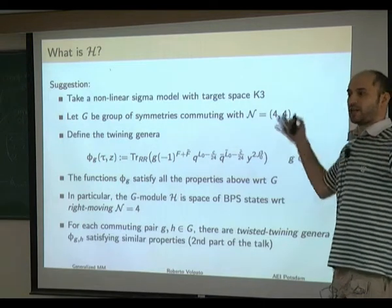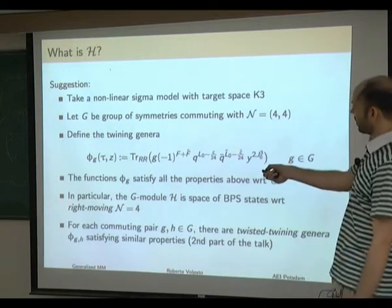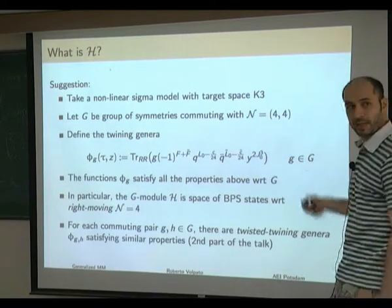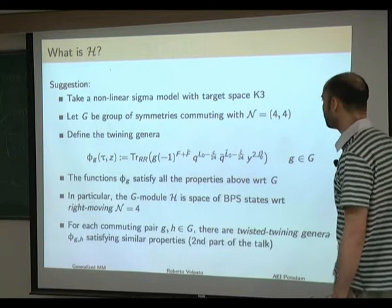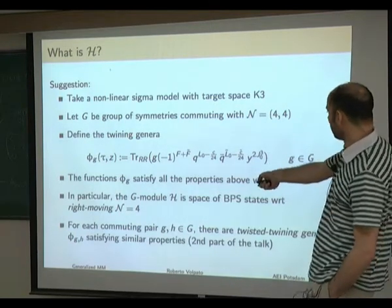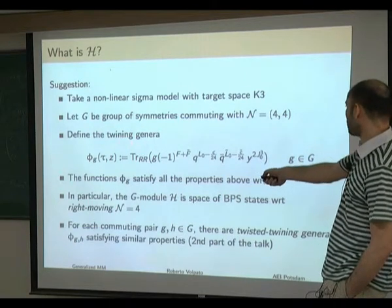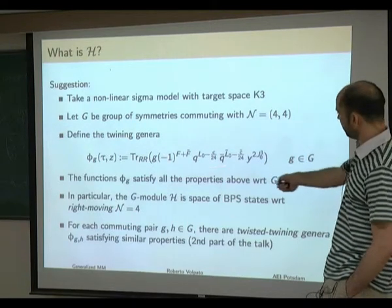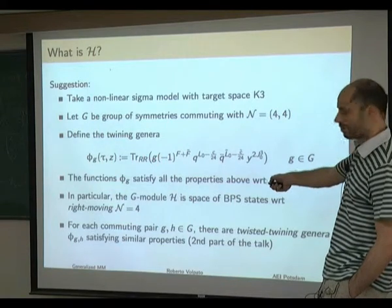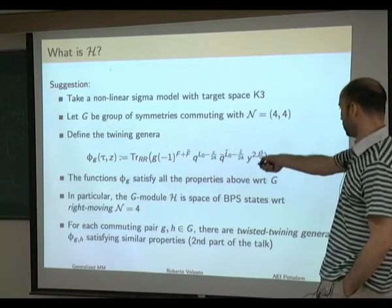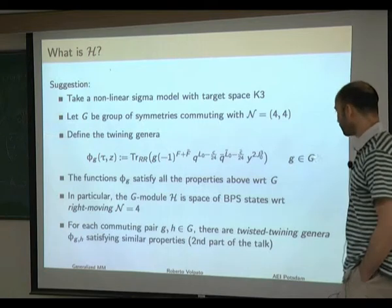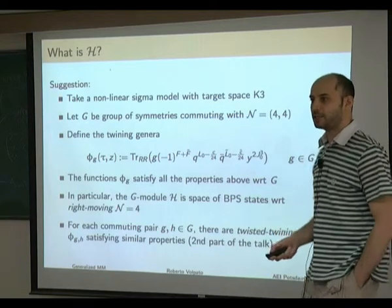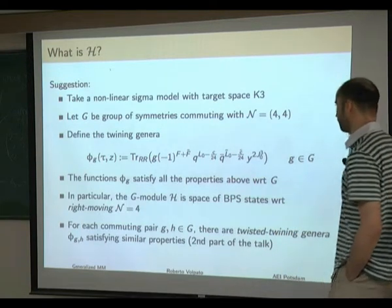Let's see what happens in a generic nonlinear sigma model with target space K3. Suppose this nonlinear sigma model has a group of symmetry G that commutes with the N=4 superconformal algebra. In this case we can define a twining genus for each element of G, by taking the definition of the elliptic genus and inserting the element G inside the trace. This is well-defined, and this function phi_G satisfies all the properties we saw, with respect to the group G instead of M24.